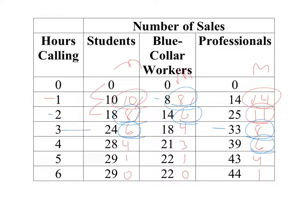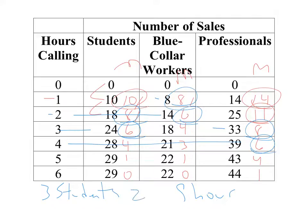We find that at six sales per hour — three hours spent soliciting students, two hours soliciting blue-collar workers, and four hours soliciting professionals — we're up to our nine-hour limit. So the solution is three hours for students, two hours for blue-collar workers, and four hours for professionals, which yields the maximum number of sales: 24 plus 14 plus 39. I hope this helps — there are a few problems similar to this on your homework, so hopefully this will help you as you work through those.